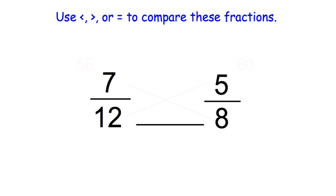For this example, we're going to compare 7 twelfths to 5 eighths. So again, we're going to do the crisscross. So 8 times 7 is 56, and 12 times 5 is 60. So 60 is larger than 56, which tells us 5 eighths is larger than 7 twelfths.